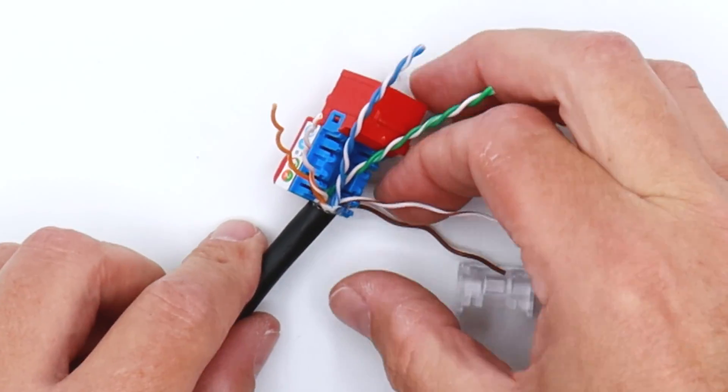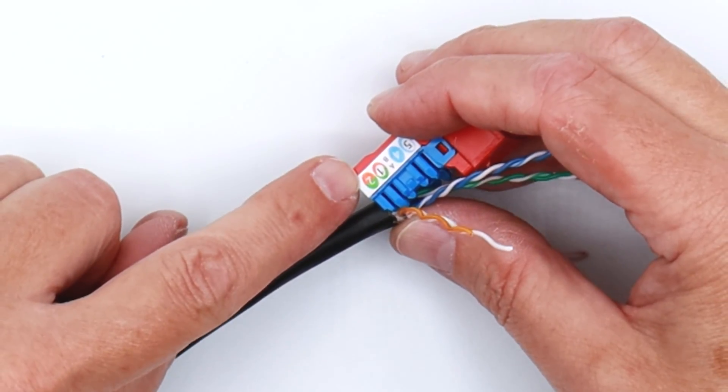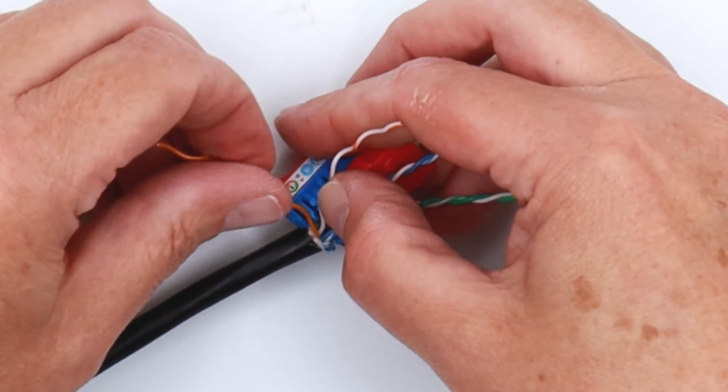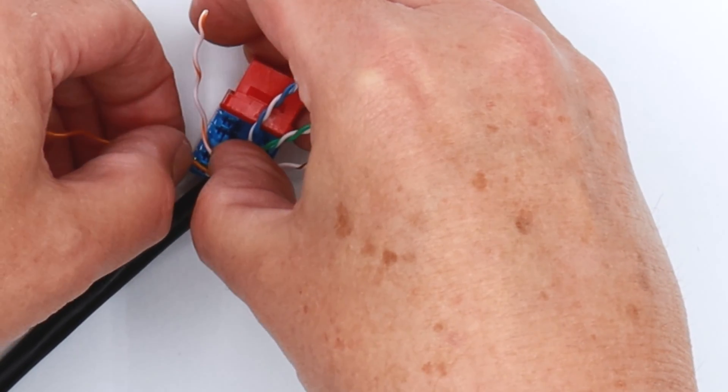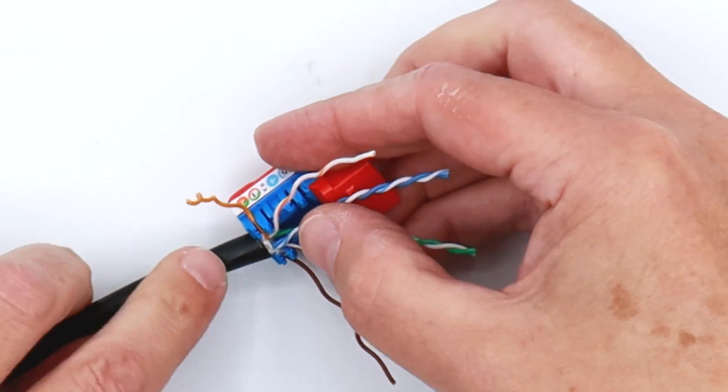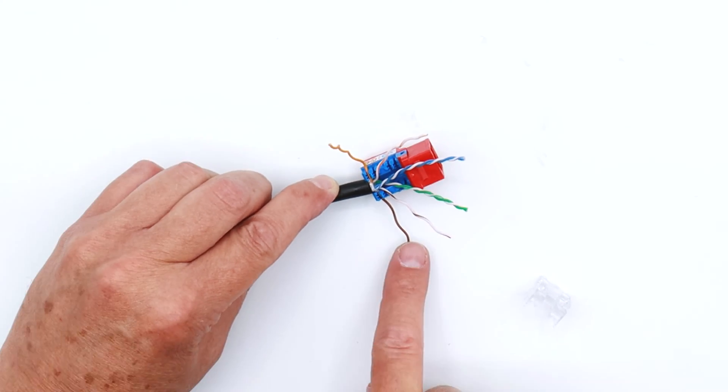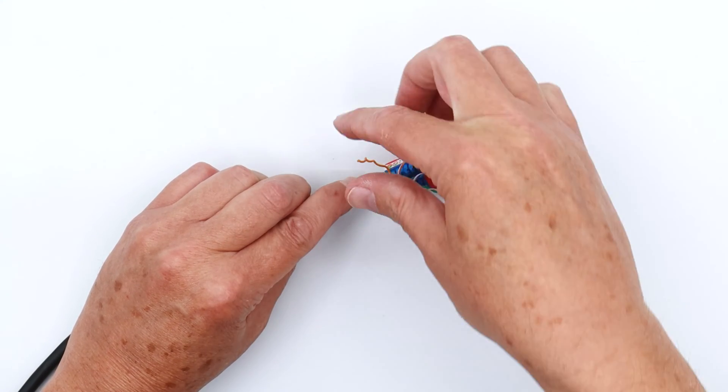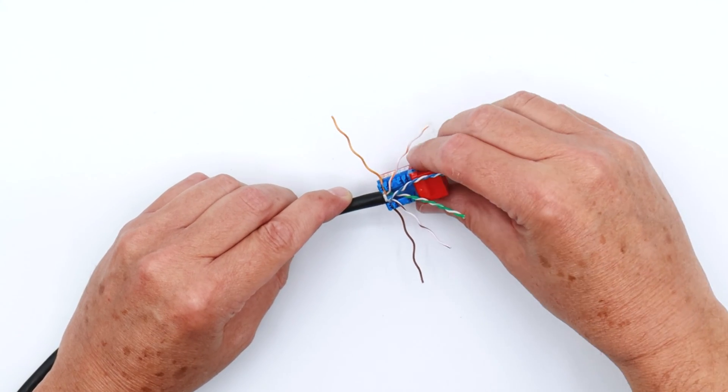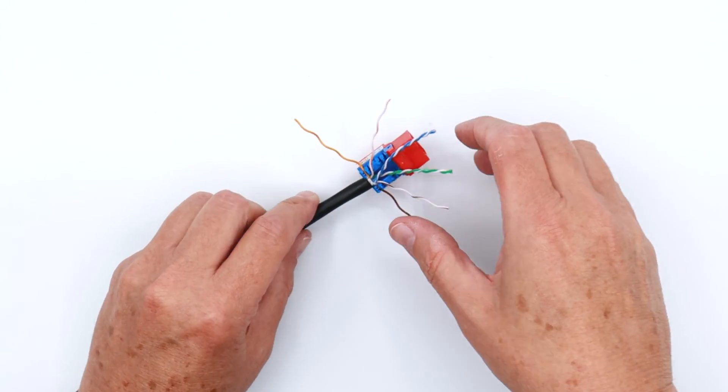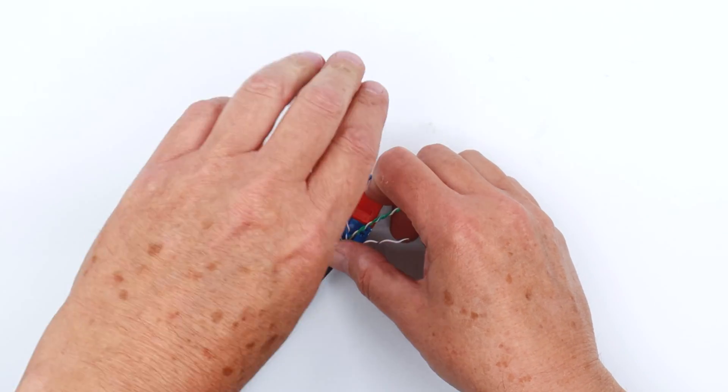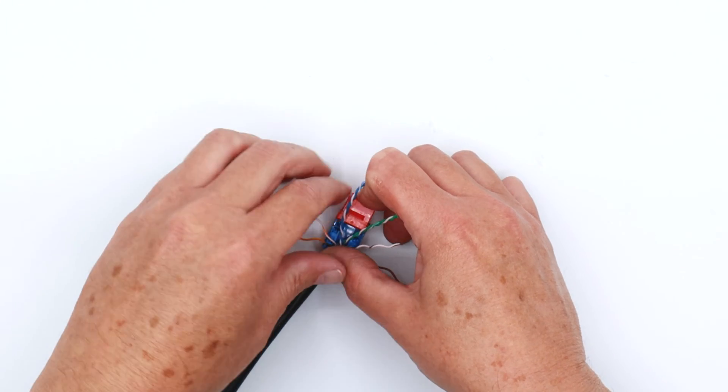So we're going to seat that brown in there first, and then you'll notice that there's solid orange. And so we're going to put that solid orange in next. And now that cable jacket is all the way against the rear of the jack. And that's to minimize crosstalk between your cables. And that's important to do because your cable jacket has a lot to do with performance.